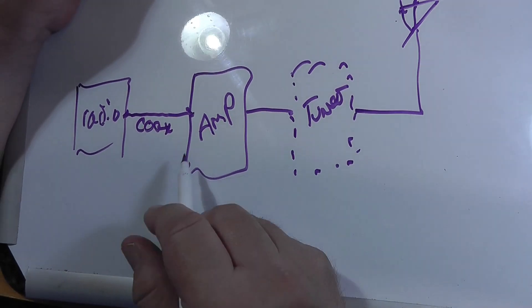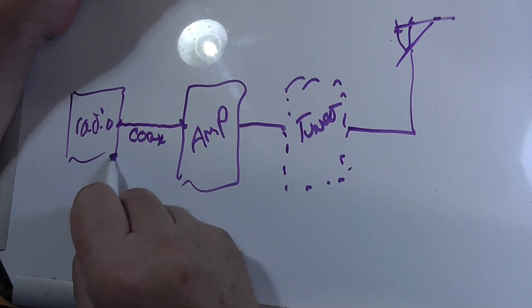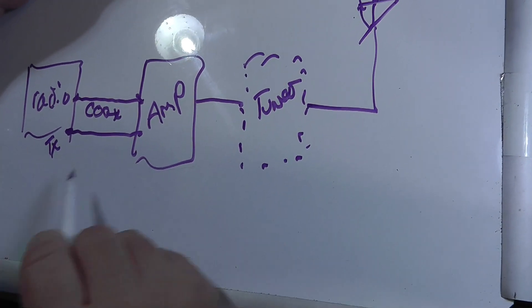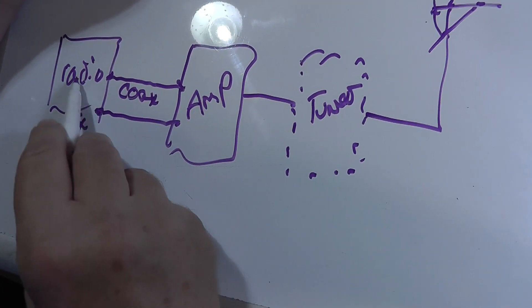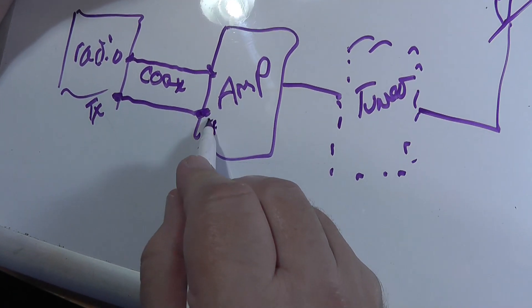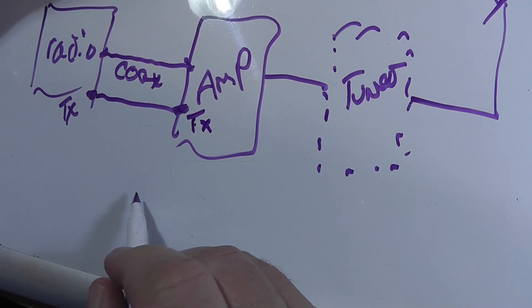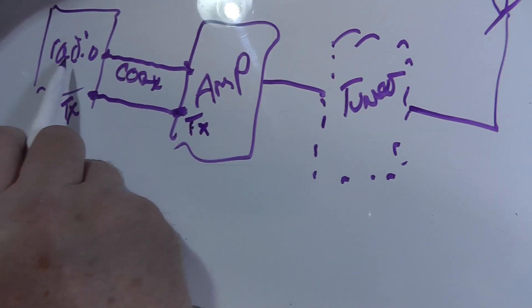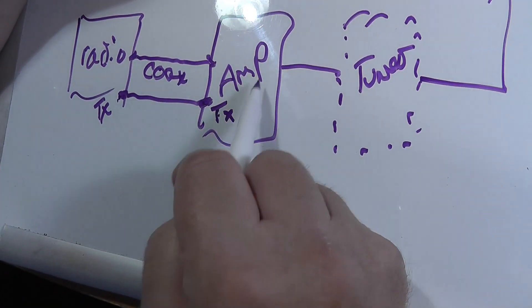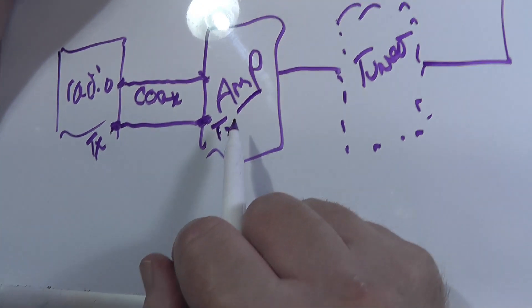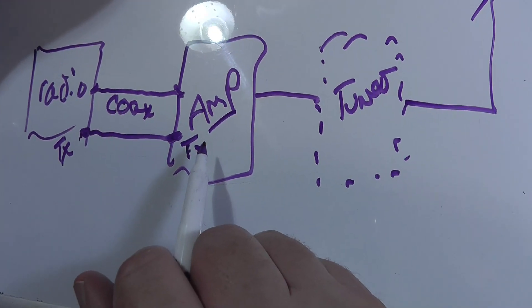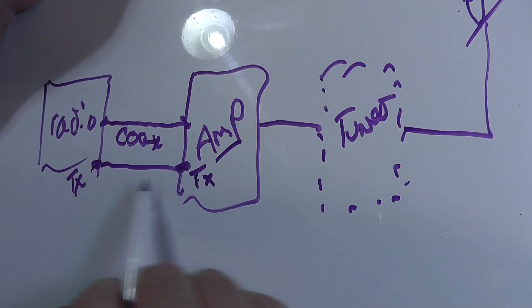Now there are two other connections here. There's a connection here that's usually labeled TX. What this does is when the radio wants to transmit, it grounds this and that tells the amplifier that you're ready to transmit.